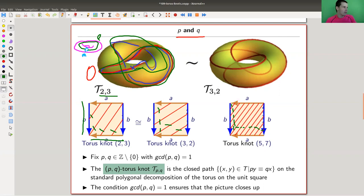And as long as the greatest common divisor of those two numbers is one, this is needed for the curve to close up if you think about it. Otherwise, it won't close up. So if the greatest common divisor is one, you get a torus knot T(p,q). And it's really just tracking the path, going around p times the meridian, going around q times the longitude in the standard polygon decomposition or in the standard embedding of the torus.